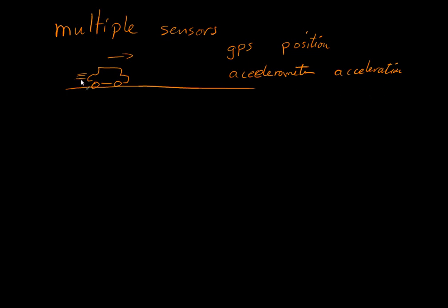And then we can say that it has some kind of IMU or accelerometer that can measure the acceleration. If we want to describe the system of the state of this car, we need to have a position, a velocity and an acceleration. And that will be our state vector.